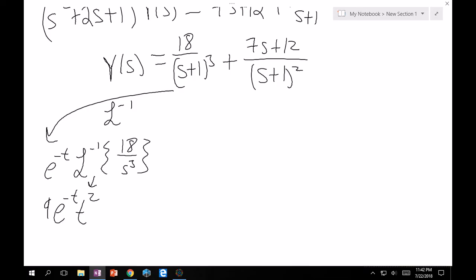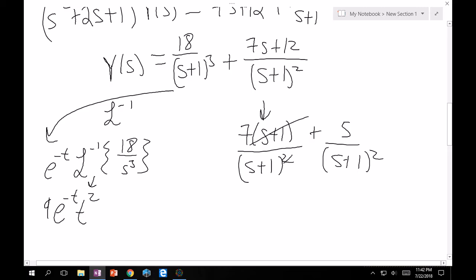Now, with some clever manipulation over here, we can say that this term is really 7 times s plus 1 plus 5. So if I group it like this, then this has to be 5. And so I'll separate them out now. 7 over s plus 1 squared plus 5 over s plus 1 squared. From here, this goes away, and then the 2 goes away, provided that s does not equal minus 1, which is implied anyway.